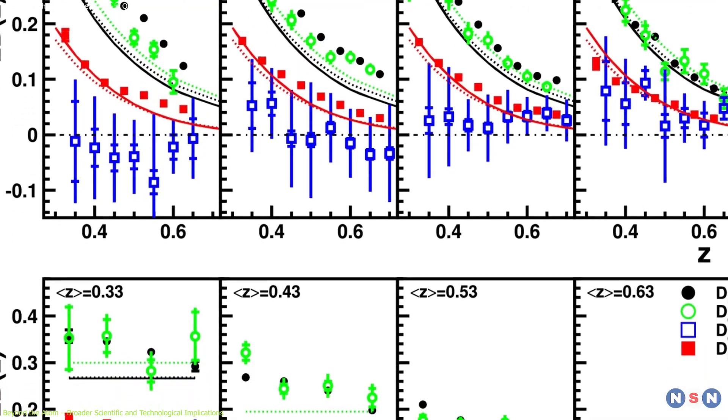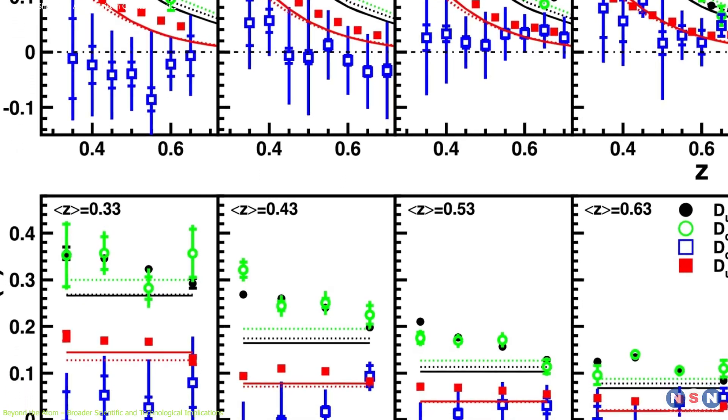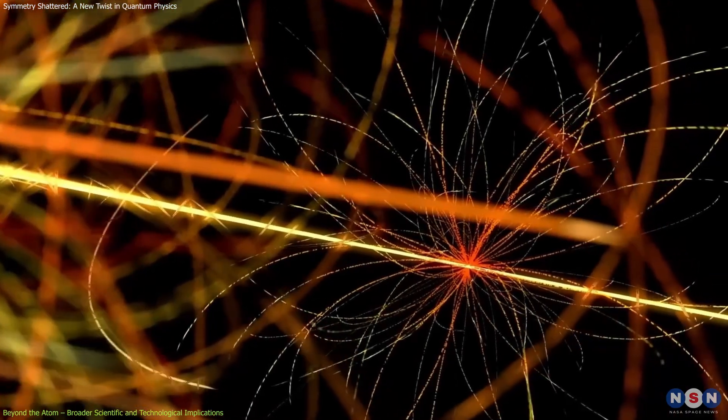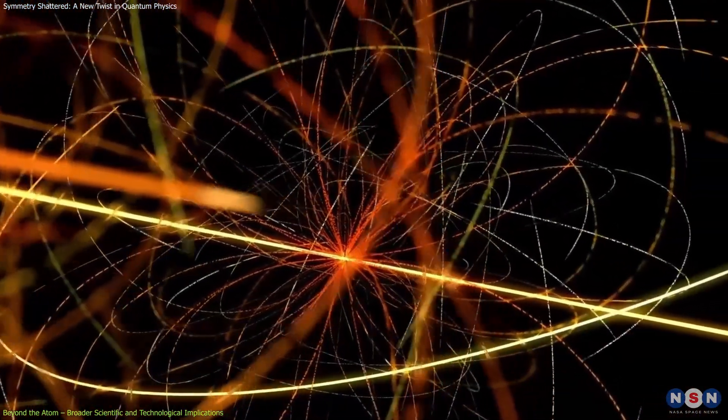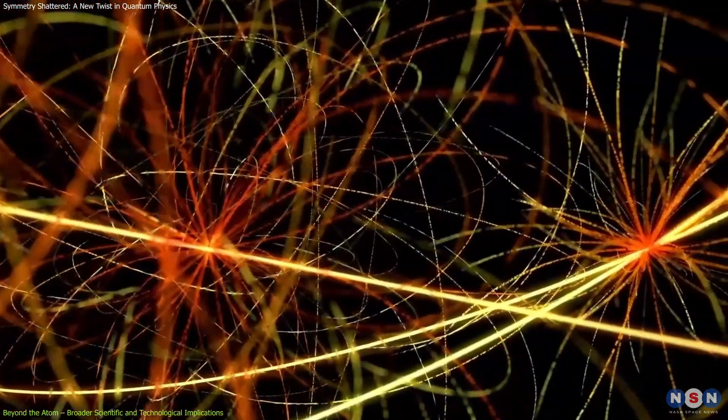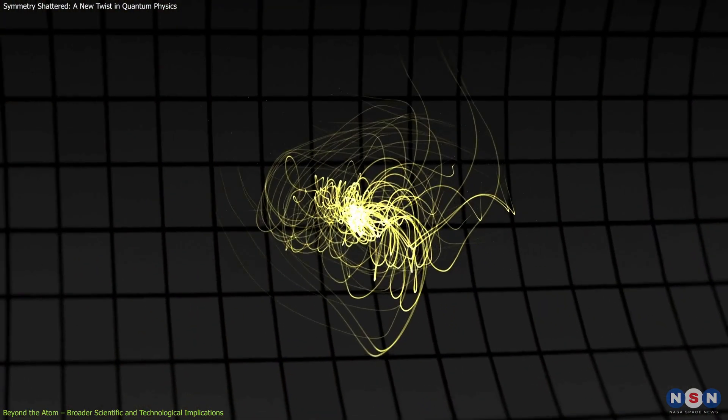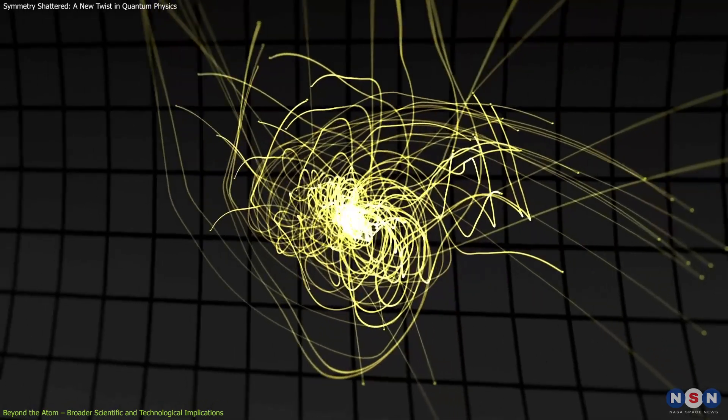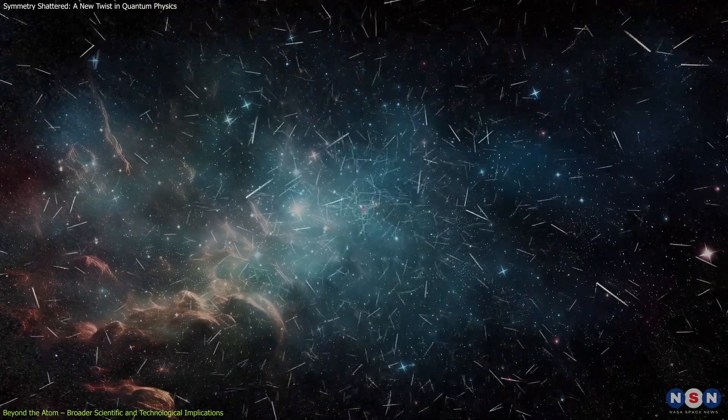The fragmentation asymmetries discovered by Dutta's team echo this concept. By showing that even quark interactions break symmetry under specific conditions, it reinforces that these violations aren't isolated quirks. They're part of a deeper, universal pattern.